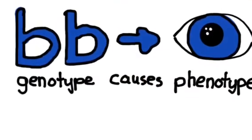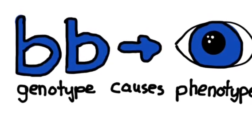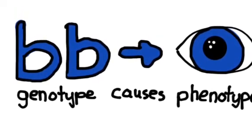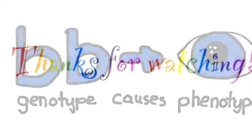So, in summary, genotype is a person's allele combination, while phenotype is a person's physical appearance based on that genotype. Thanks for watching!